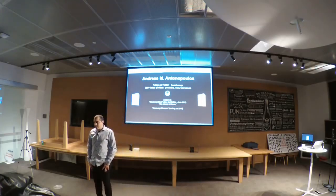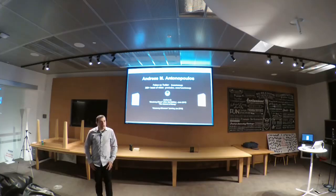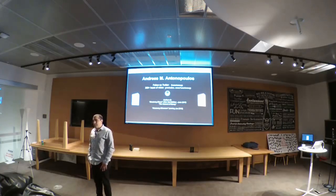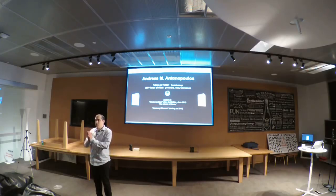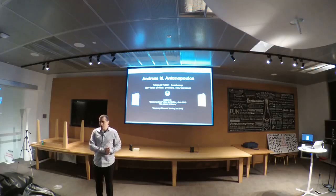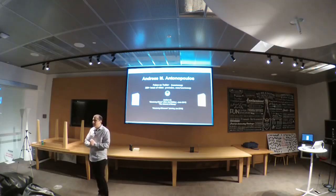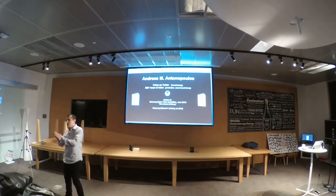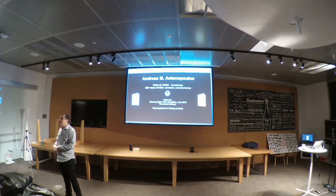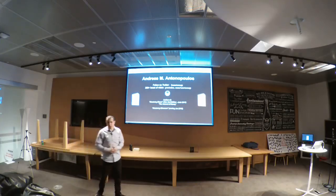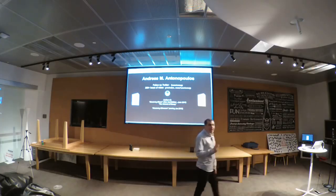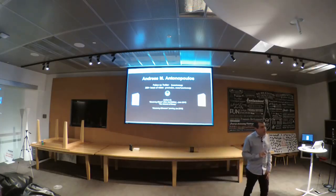A fork is a condition that occurs in an open blockchain, whereby the state of the blockchain diverges into two states, whereby part of the network has a different perspective on the history of transactions than another part of the network. That is the basic definition of a fork — it is a divergence in perspective of the state of the blockchain.